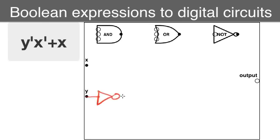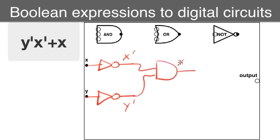So I have an inverter to give us y0 and another inverter to generate x0. I need to then AND those two together to get the expression x0, y0.